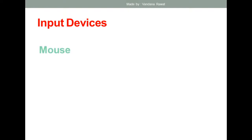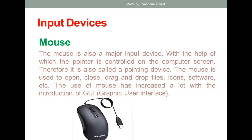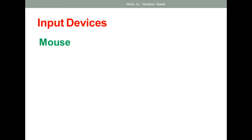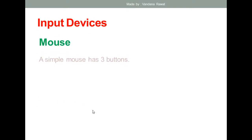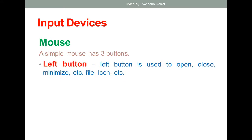I haven't discussed how many types of mouse there are or the working of its parts. A mouse has two buttons and one wheel. A simple mouse has three parts: the first is the left button, which is used to open any file, close any file, and for minimizing any file or icon.